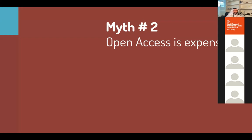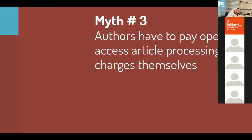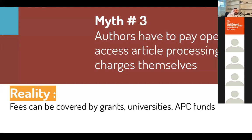The second myth is that publishing open access is expensive. Yes, it can be — some journals charge $1,000, others $3,000 — but many open access journals are free to publish, and many publishers worldwide offer waivers for low- and low-middle-income countries. The third myth is that authors have to pay themselves. Authors do sometimes pay, but there are options: grants, universities, and APC funds. Our goal as a community should be to make sure authors do not pay out of pocket.